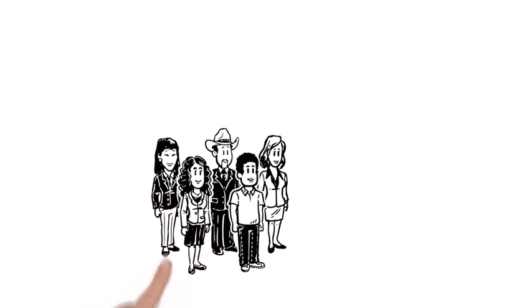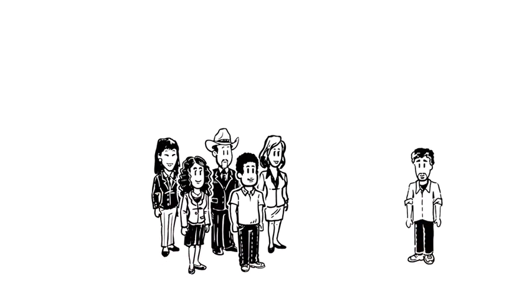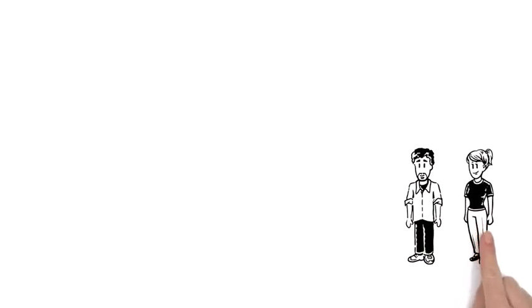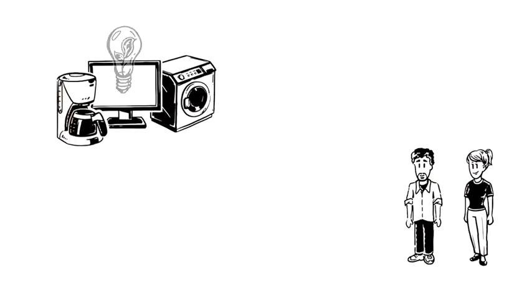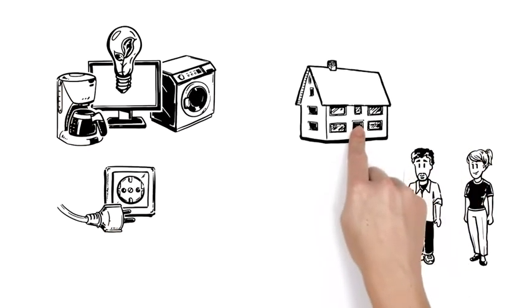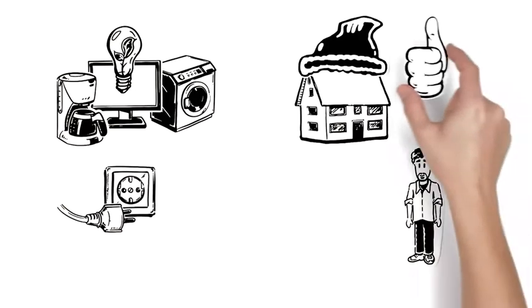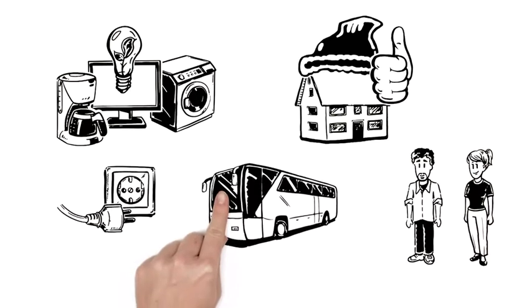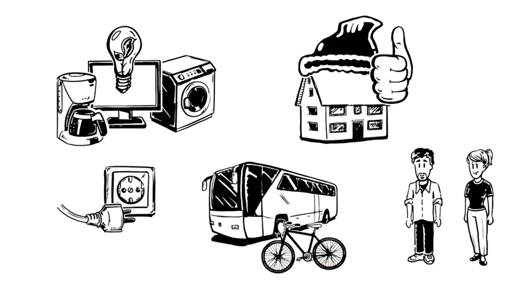It starts with everyone individually, even Tom. But what exactly can he do? Thanks to Mary, Tom chooses energy-saving electronic devices and unplugs them after use. Also, he's improved the thermal insulation of his house to heat it more efficiently. And as often as he can, he takes the bus or bike instead of the car.